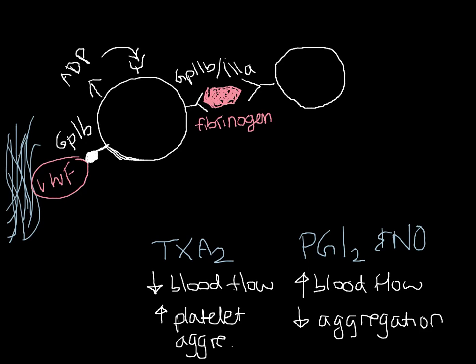To continue straight on from the video explaining thrombogenesis and platelet aggregation, you'll remember I said activated platelets will produce thromboxane A2, and they do this via the cyclooxygenase enzyme. So aspirin inhibits this cyclooxygenase enzyme, thus decreasing the amount of thromboxane A2 production and thereby decreasing blood flow and increasing platelet aggregation.